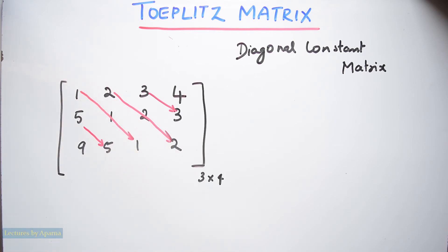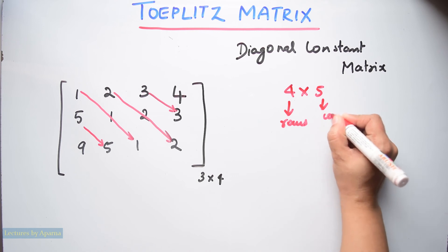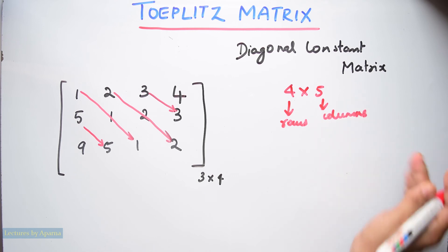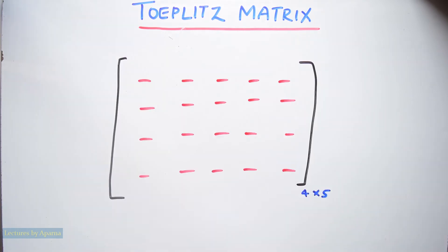Now let us see how we can write a Toeplitz matrix. I am going to write a 4 by 5 Toeplitz matrix. 4 by 5 means I will be having 4 rows and 5 columns. Now I am going to fill these blanks.